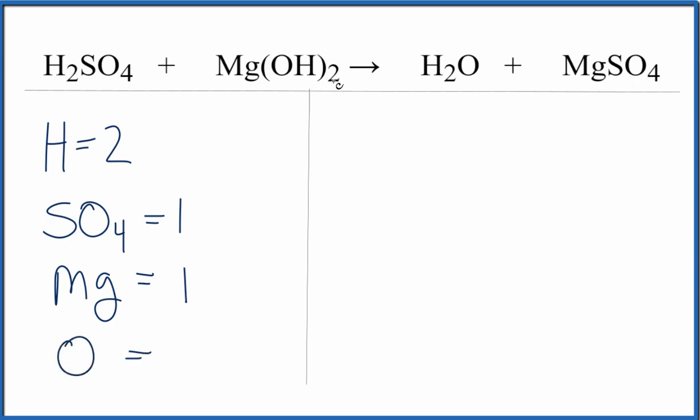For oxygen, I have two - it applies to this whole thing - so two times one, that's two. And then I notice that I have two hydrogens as well. So I have these two plus these two, so I have four hydrogen atoms.